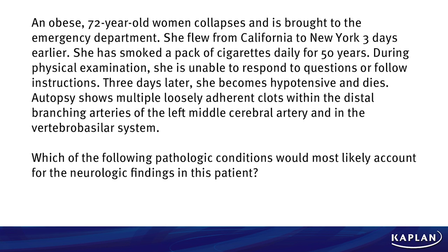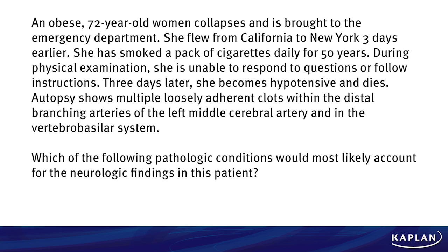Which of the following pathologic conditions would most likely account for the neurologic findings in this patient? Is it A, atherosclerosis of penetrating cerebral arteries; B, endocarditis of the tricuspid valve; C, patent foramen ovale; D, pulmonary thromboembolism; or E, Trousseau syndrome?